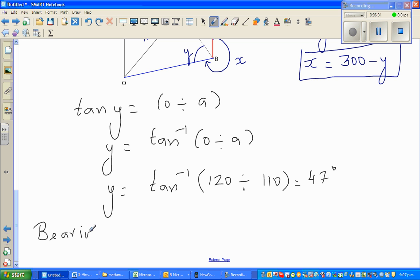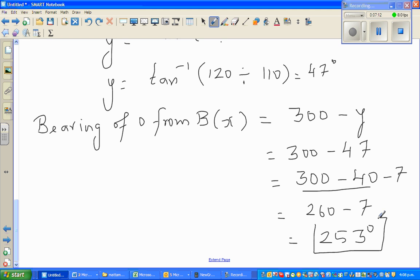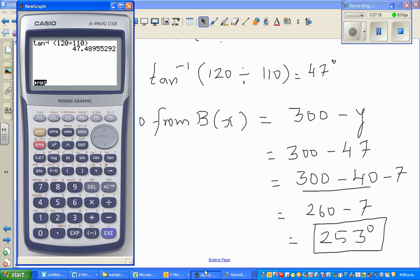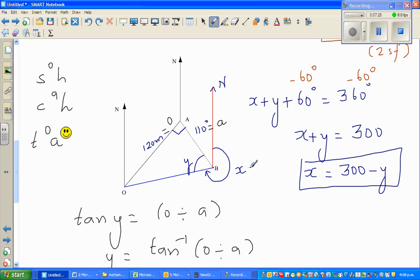But the bearing is x. So let me write it like this: bearing of O from B, from B, is x, which is 300 minus y. So we know y, that is 300 minus 47. You don't need a calculator, so I'll do it without the calculator: 300 minus 40 minus 7, so this becomes 260 minus 7 which is 253 degrees. So this is in three digits, so that's the bearing. Let us check the answer, it's always good to check. So 300 minus 47 is 253 degrees, so the bearing of O from B is 253 degrees, that was the answer.